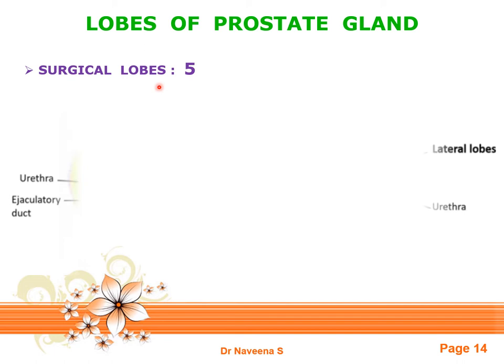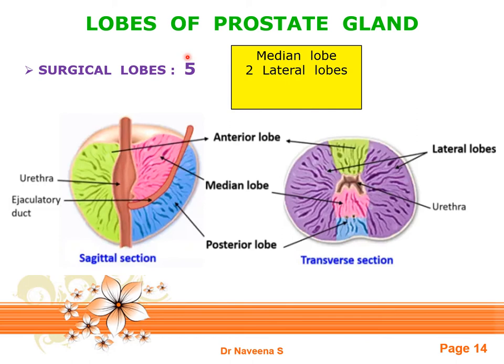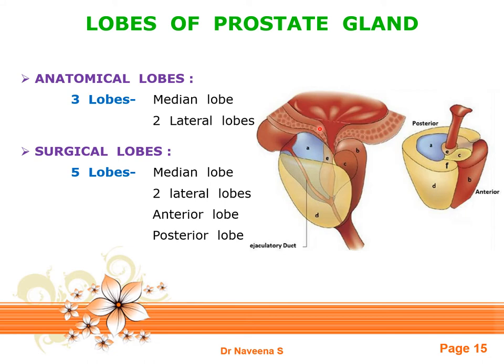The five surgical lobes are: the median lobe above the ejaculatory duct, two lateral lobes bilaterally, an anterior lobe — which is anatomically the isthmus — in front of the prostatic urethra, and a posterior lobe below the ejaculatory duct. These lobes are classified based on the presence or absence of glandular tissue within the prostatic parenchyma.